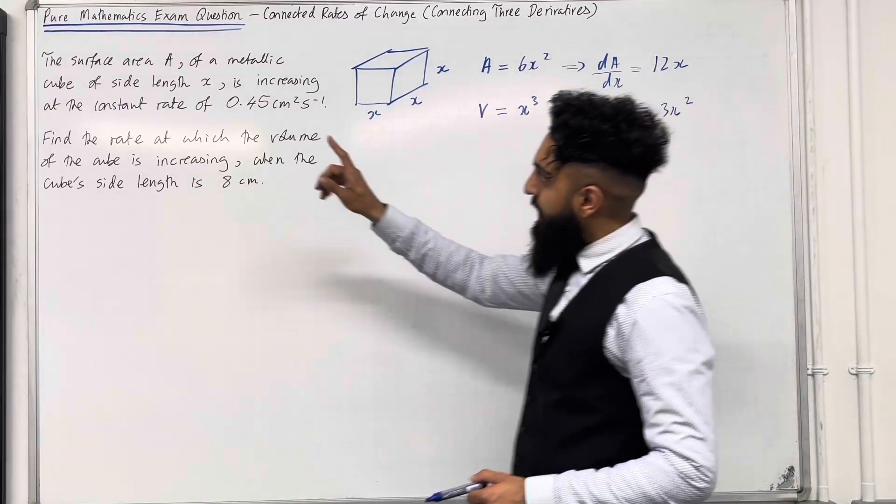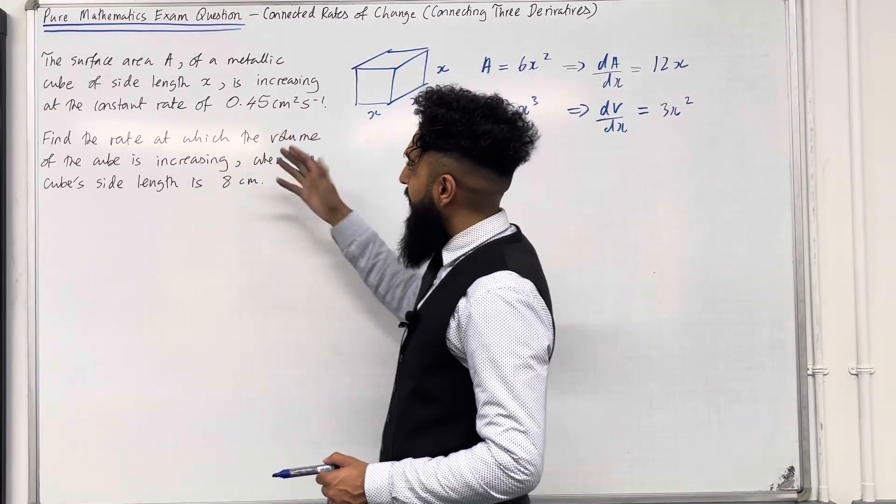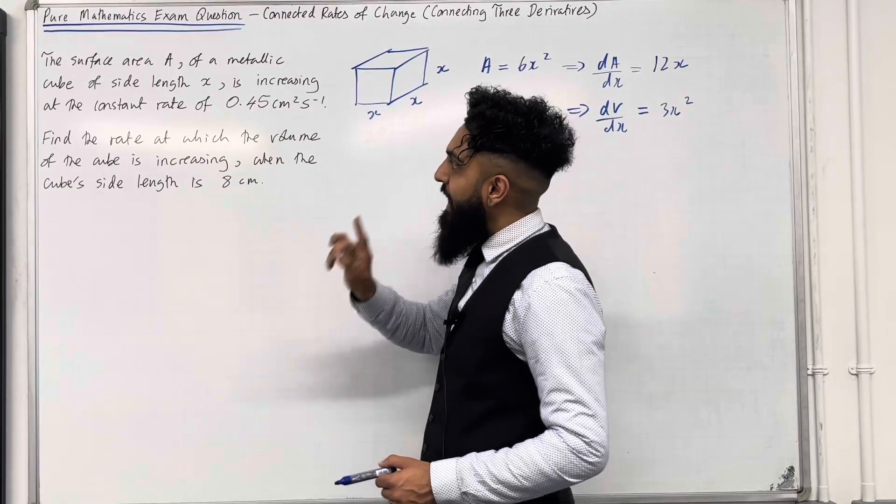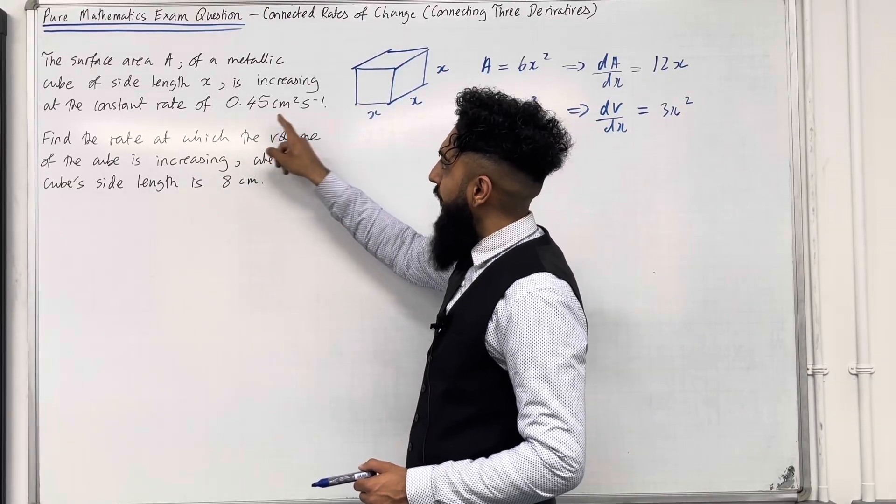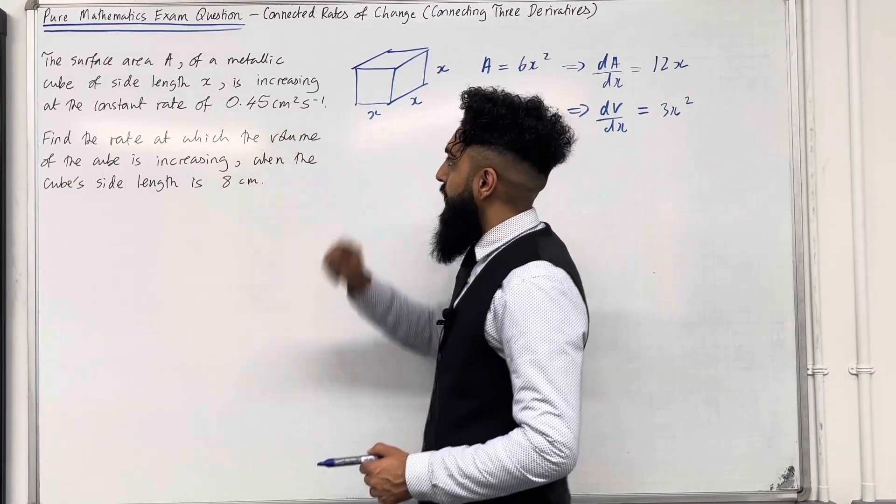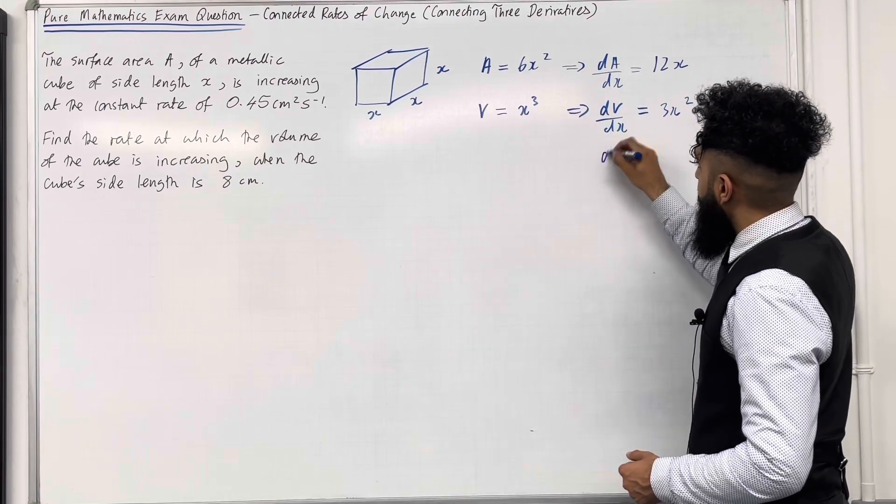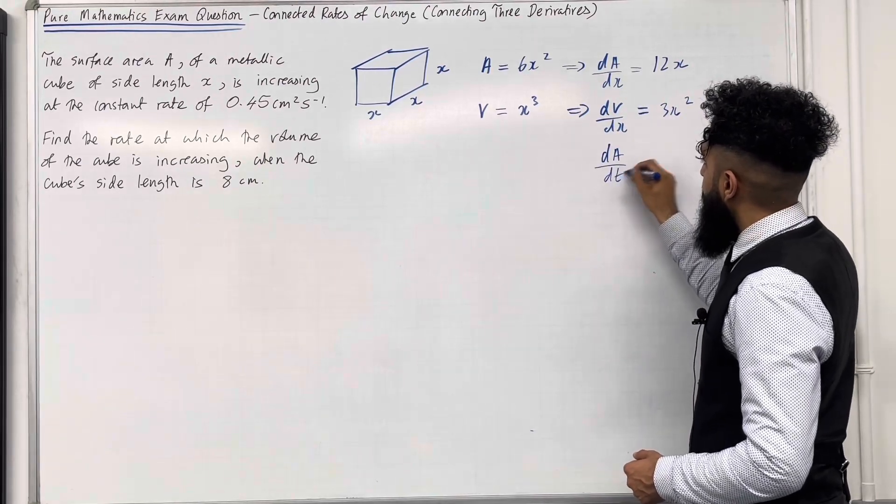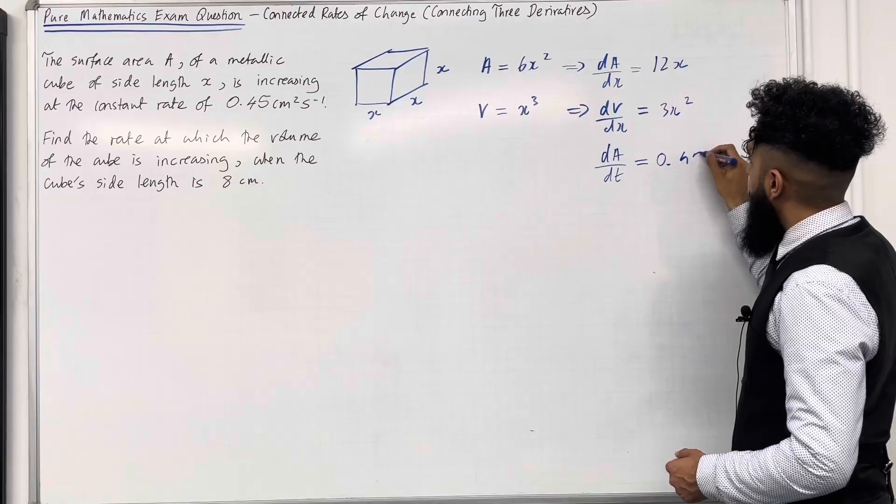We also know that the surface area A of a metallic cube of side length X, so this is my cube, is increasing at the constant rate of 0.45 centimeter squared per second. So dA over dt is equal to 0.45.